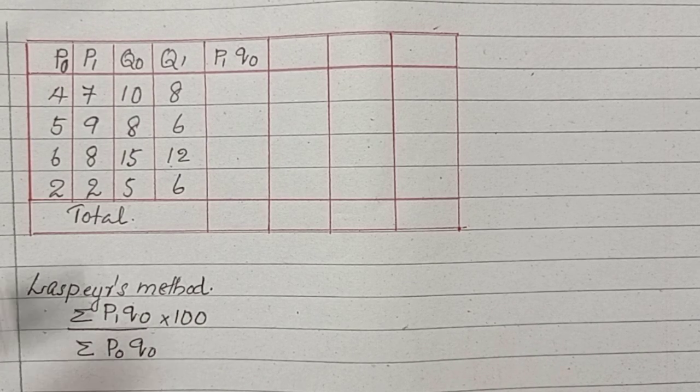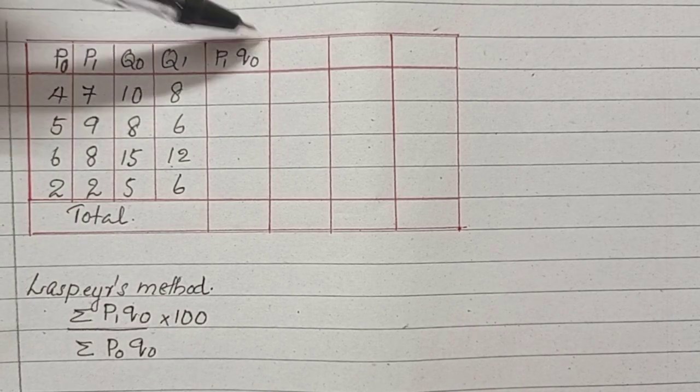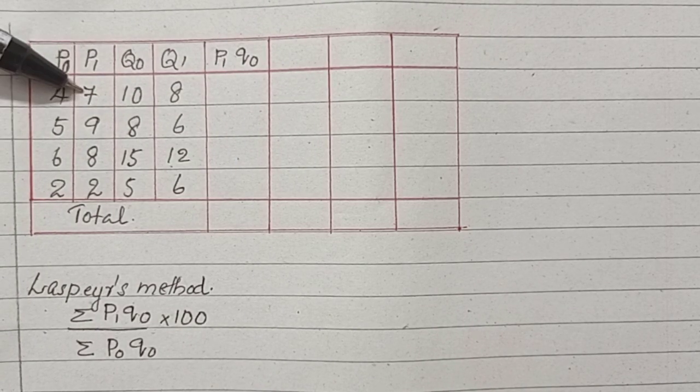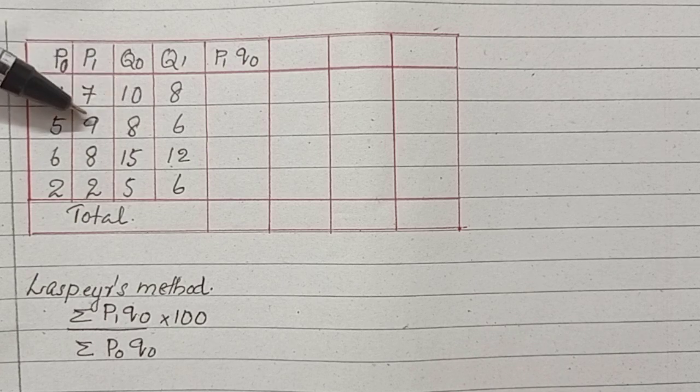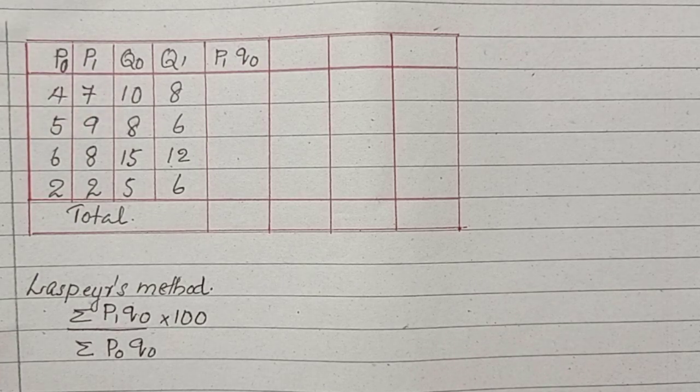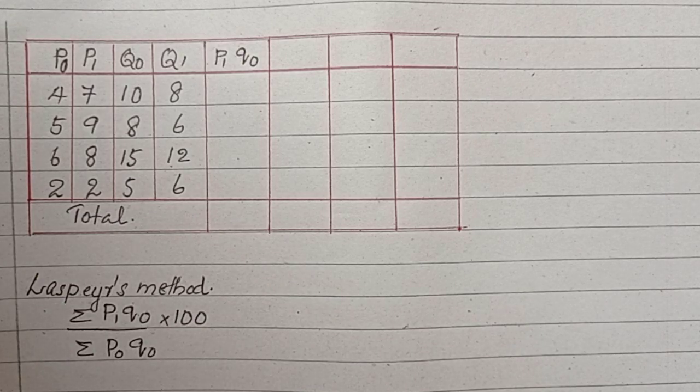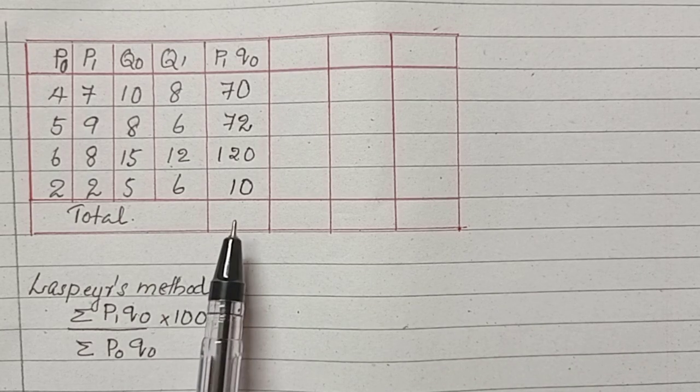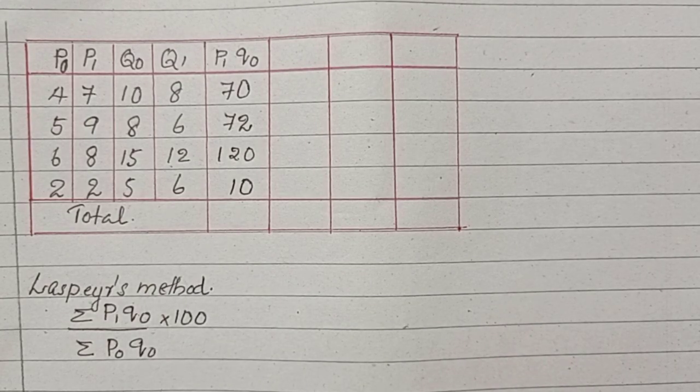First we have to multiply P1 and Q0. P1 is here and Q0 is here. 7 into 10 is 70, 9 into 8 is 72, like that we are going to do. Now we are going to find the sum of P1 Q0. This one will be 272.